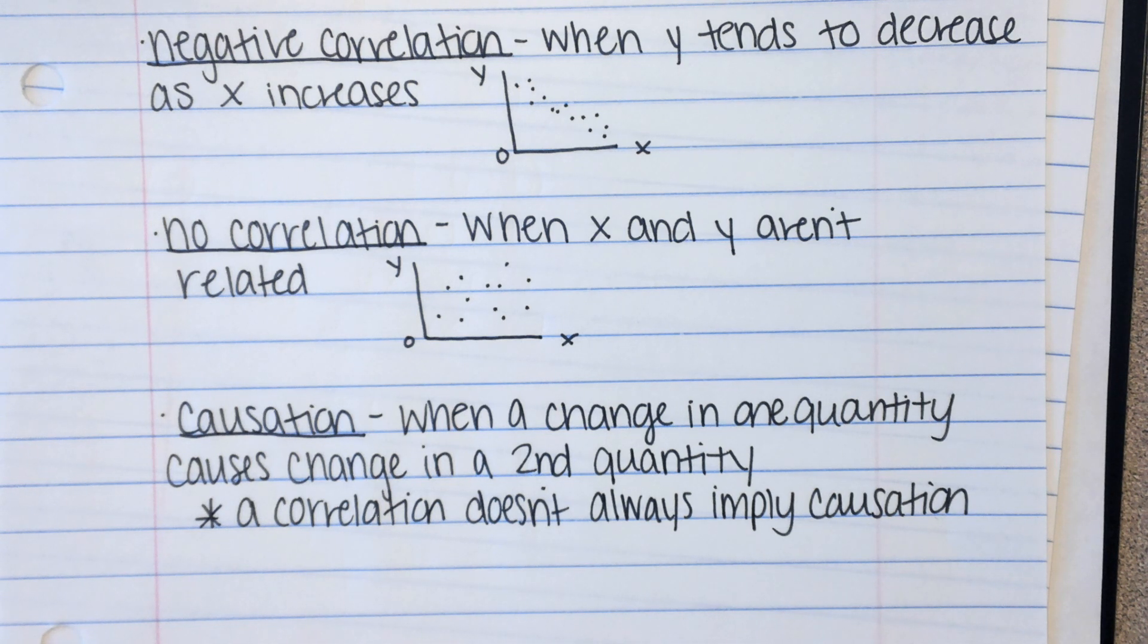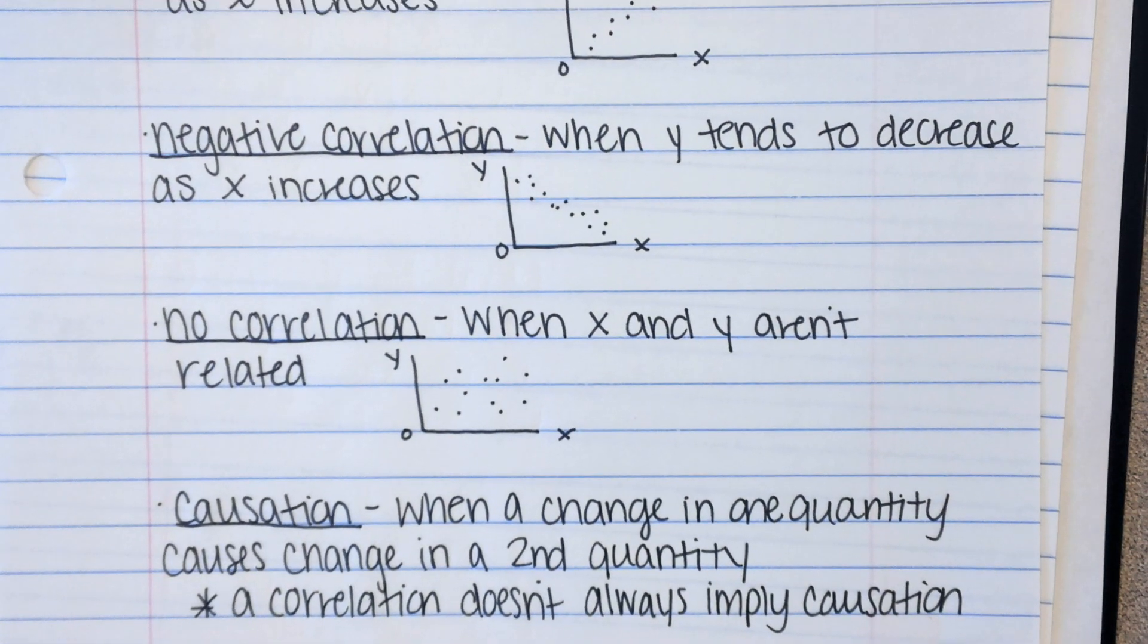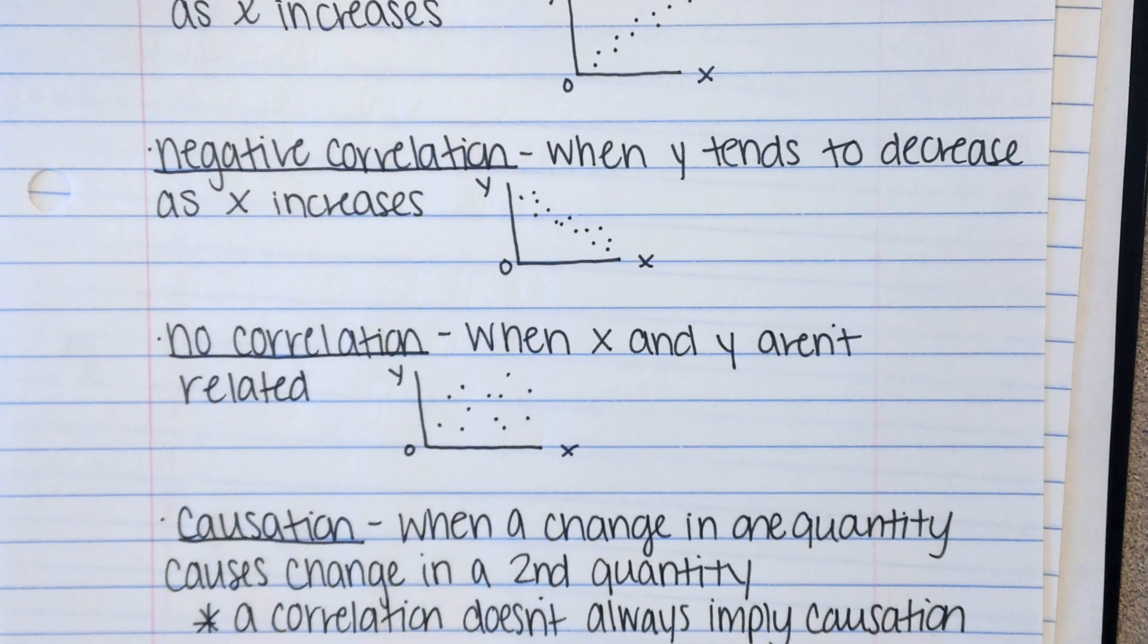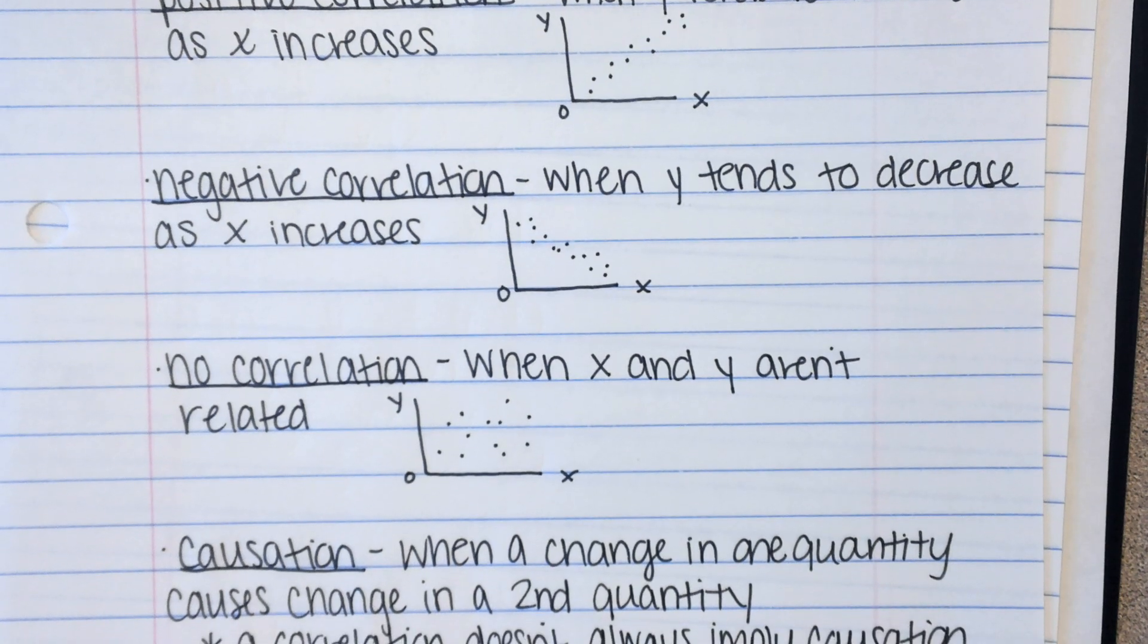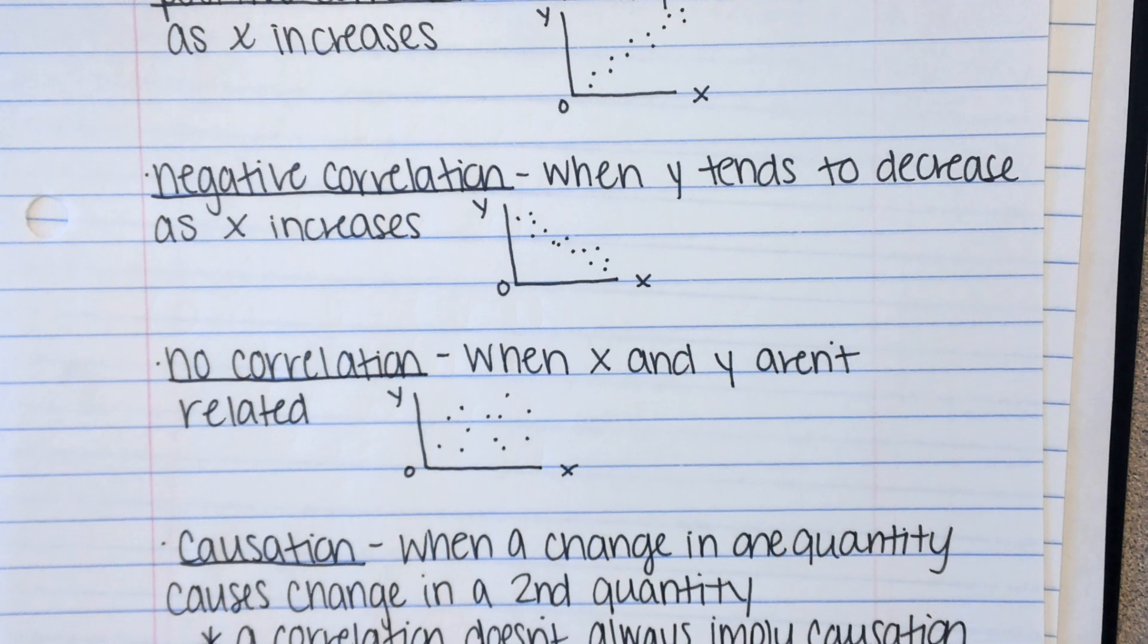Now, I know that's kind of hard to explain. If we were in person, we could have a conversation back and forth about it and it might be a little clear. But I hope that helps. I hope that is at least somewhat clear. But basically, you just need to know positive, negative, no correlations. A correlation does not always mean causation. Okay? And you need to be able to identify correct scatterplots.